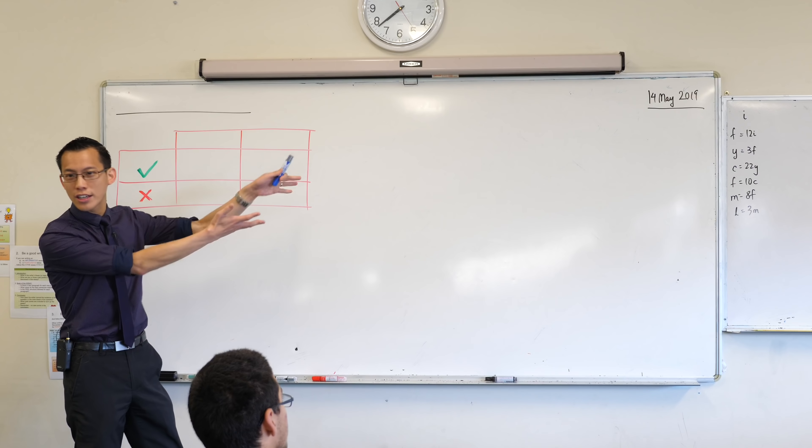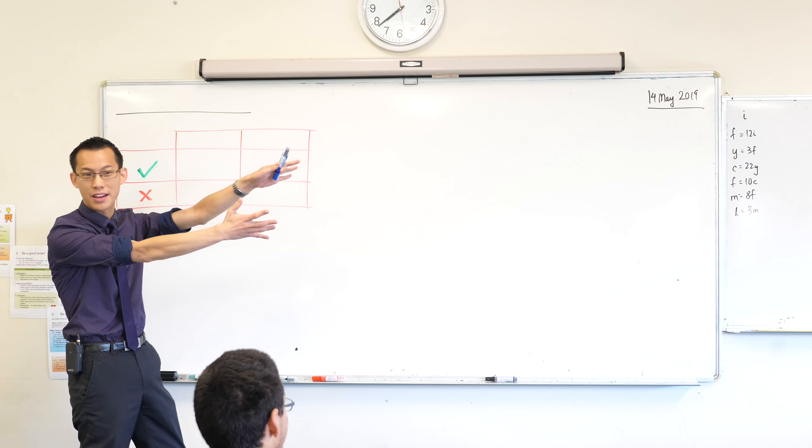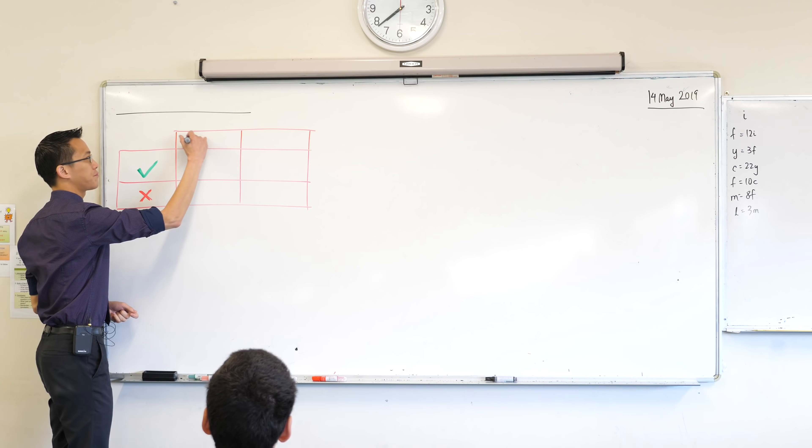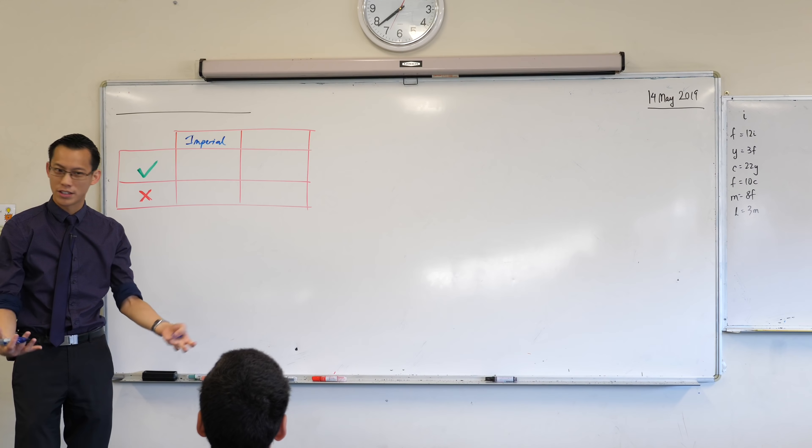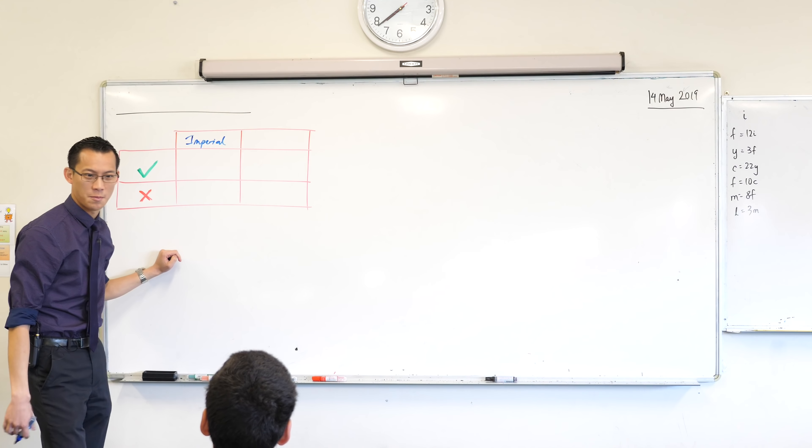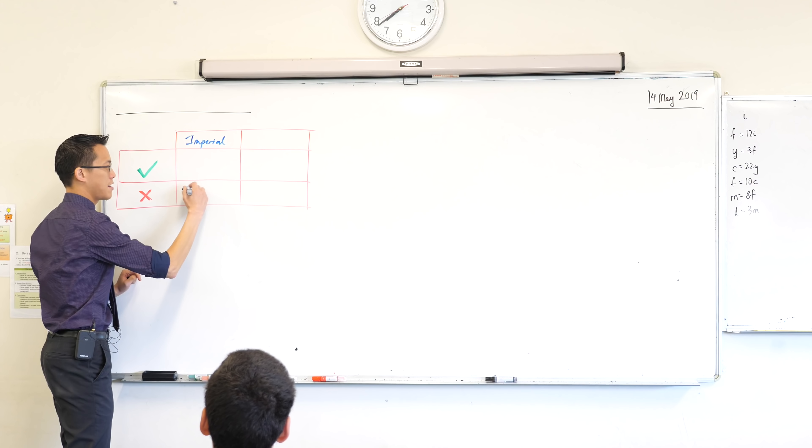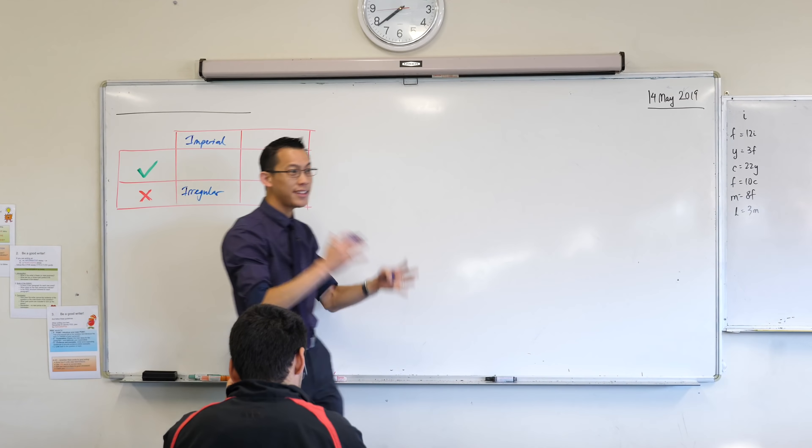Now you look at this and you kind of like, thank goodness we don't have to do this anymore. Okay, the imperial system, can someone tell me right now what's the big glaring disadvantage of the imperial system? It's irregular right, and as a consequence of its irregularity it is insanely hard to remember.